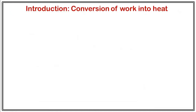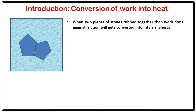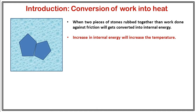I want to begin this lecture with a discussion on conversion of work into heat. Suppose we have two pieces of stones kept under a water body. When these two pieces of stone are rubbed together, there will be work done against friction. This work done will get converted into internal energy, and as a result there will be a rise in temperature. Due to this there will be a difference in temperature between the stone and water, and as a result there will be a flow of heat from stone to water.